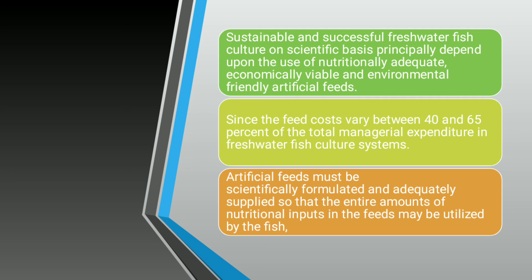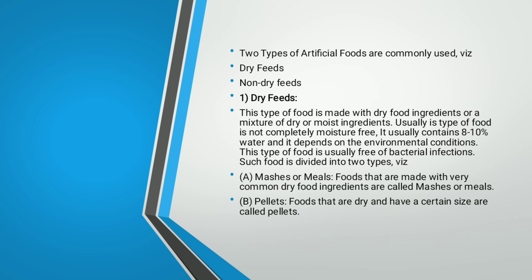Freshwater fishes cultured on a scientific basis principally depend on nutritionally adequate, economical, and environmentally friendly artificial feeds that lower overall culture costs while promoting higher growth rate and better taste. Feed accounts for 40–65% of total managerial expenditure in freshwater fish culture systems, alongside water quality, pH, temperature, and disease management. Artificial feeds must be scientifically formulated and adequately supplied so that all nutritional inputs are utilized by the fish. Two types of artificial foods are commonly used: dry feeds and non-dry feeds.